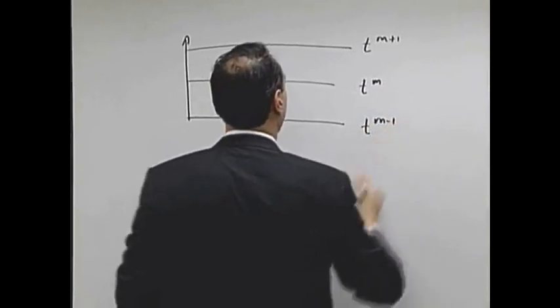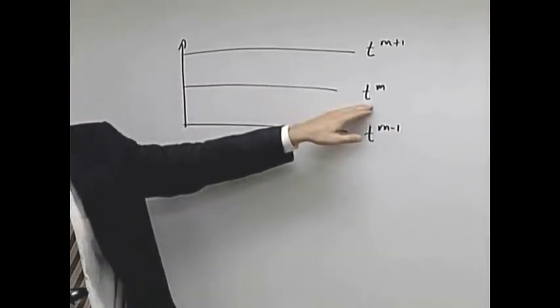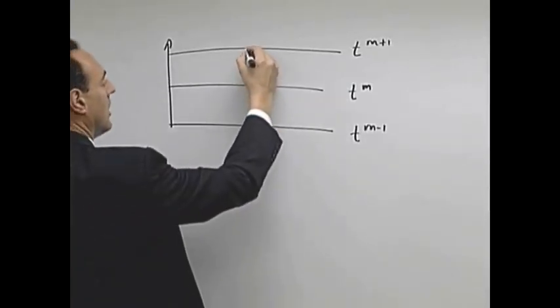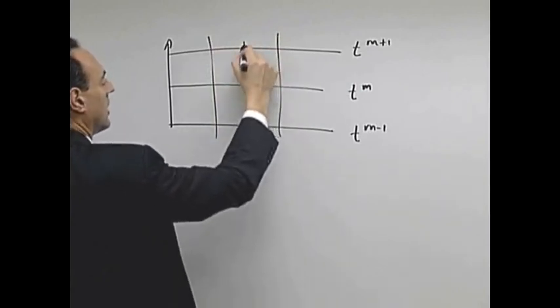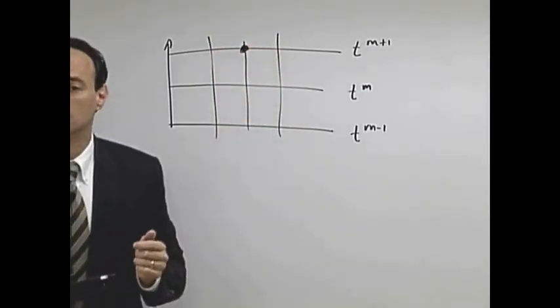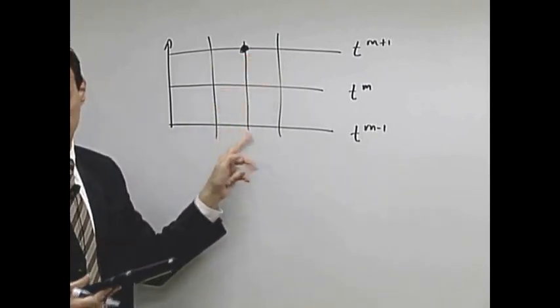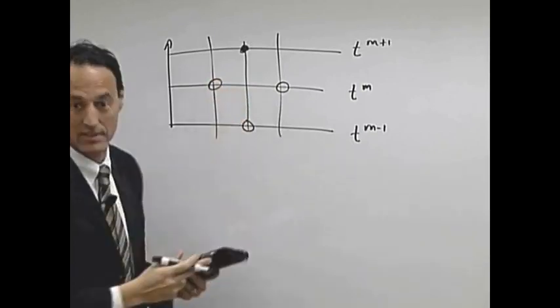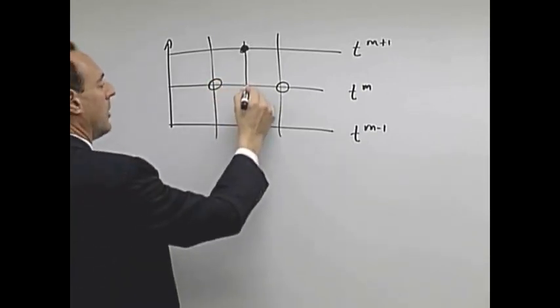When I solve forward in time, if I have my solution at time t of m and I want to get my solution at time m plus 1, suppose I want this point here - what points does it rely on? It relies on t of m minus 1 at that same point, and it relies on these two neighbors.